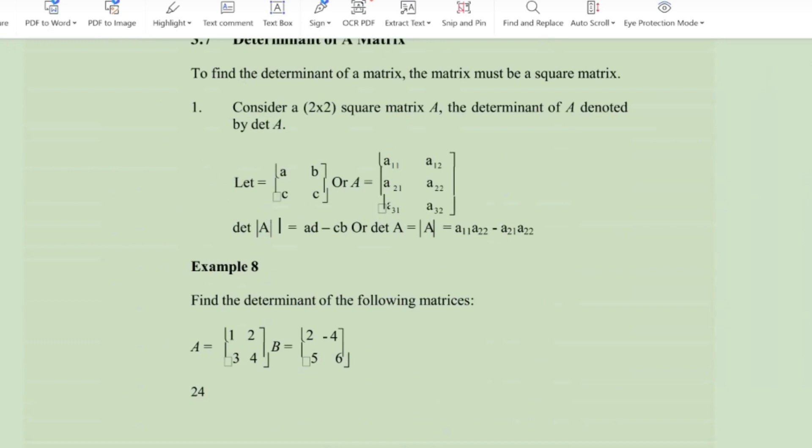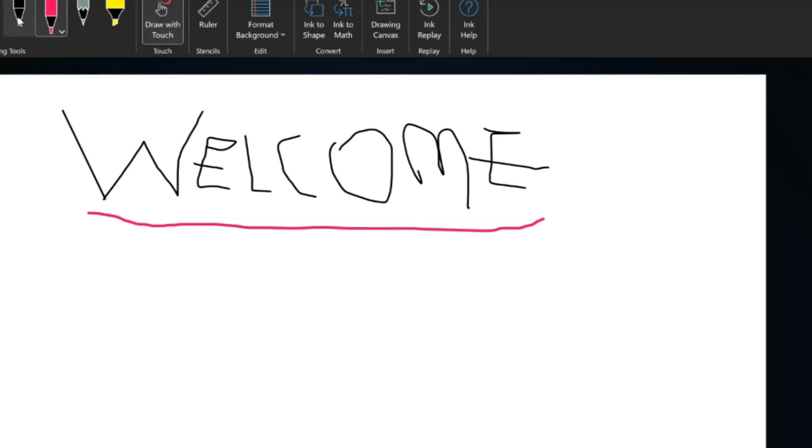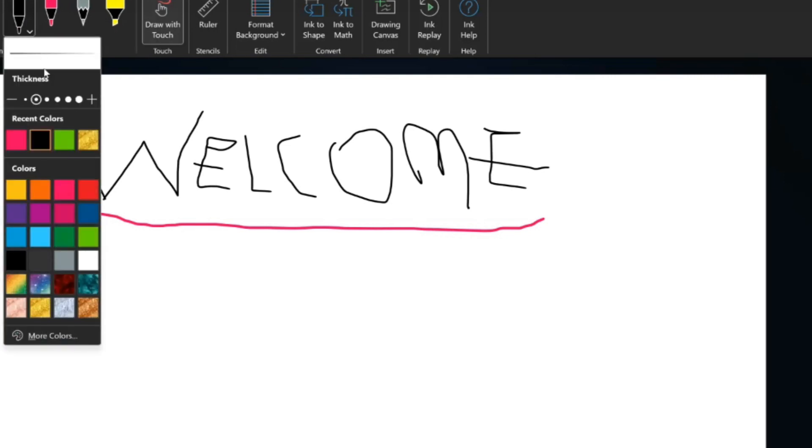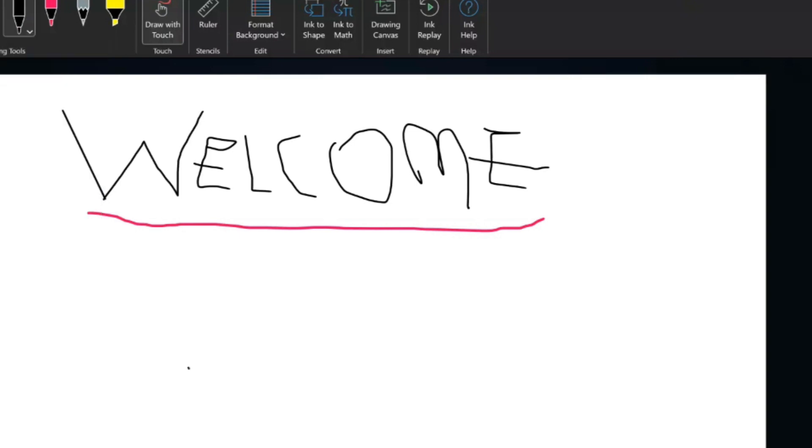So let's take this question. We have A. We have two, four, one, three. And we have B. We have five, three, one, one. Now let's see.